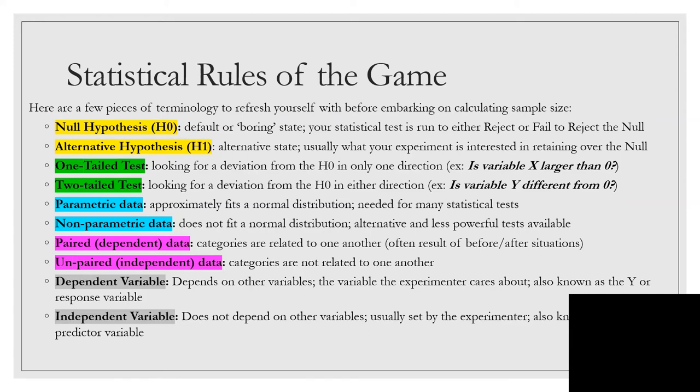Finally, we have dependent versus independent variables. A dependent variable depends on other variables. You're usually trying to predict or estimate this variable based on others. This is the variable experimenters usually care about. It's also known as the Y or the response variable. The independent variable doesn't depend on other variables. It's usually set by the experimenter, and it's also known as the X or the predictor variable.